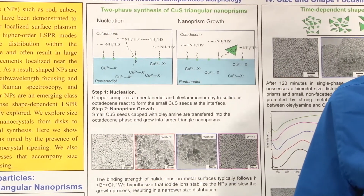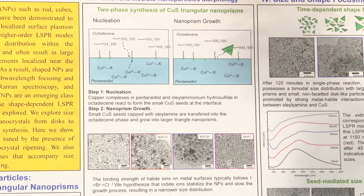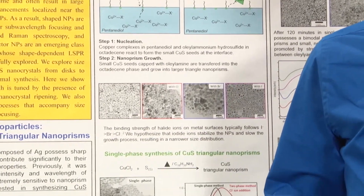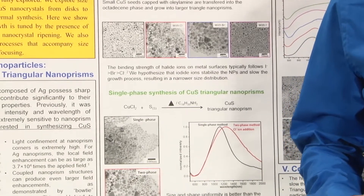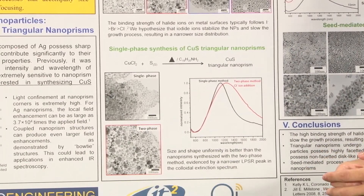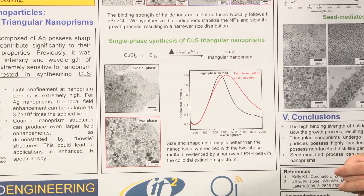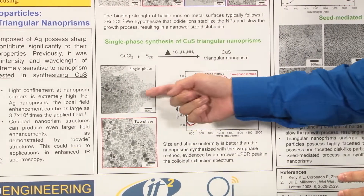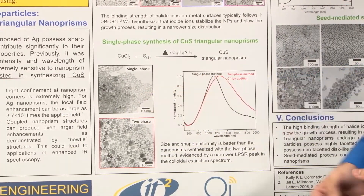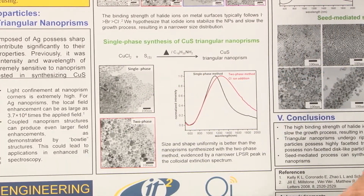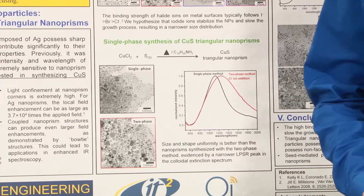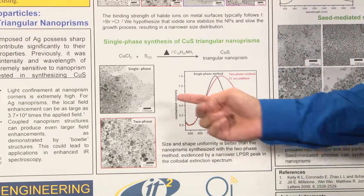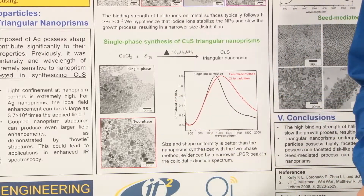The next method I used was a single-phase synthesis, where all the reagents were combined into one solvent and reacted to form these nanoprisms. As shown here, you can see that the single-phase synthesis would be more favored due to its yield of more uniform shape and size particles.